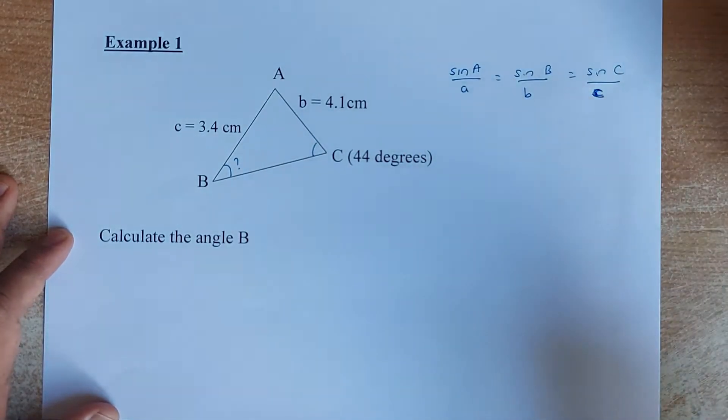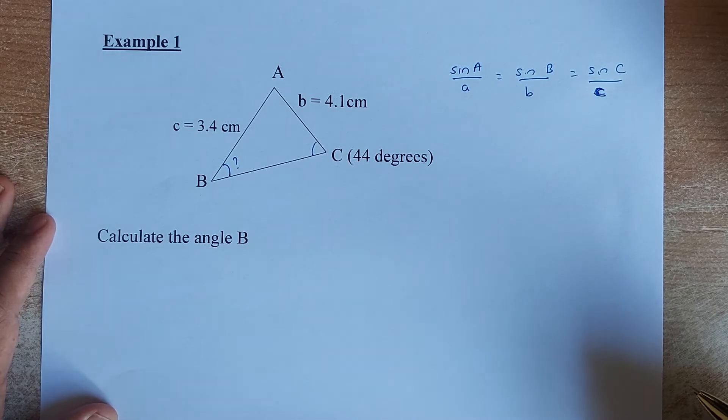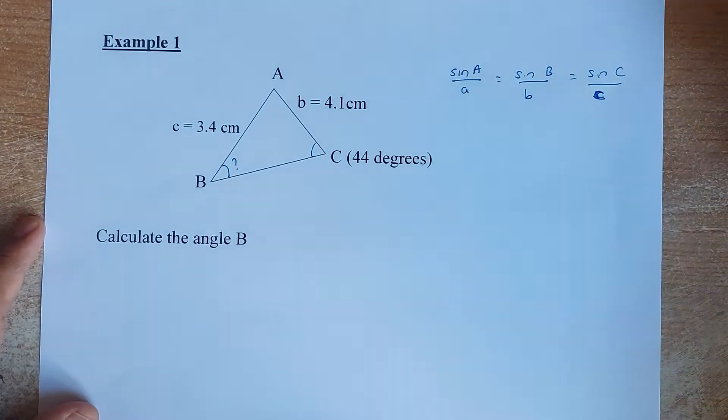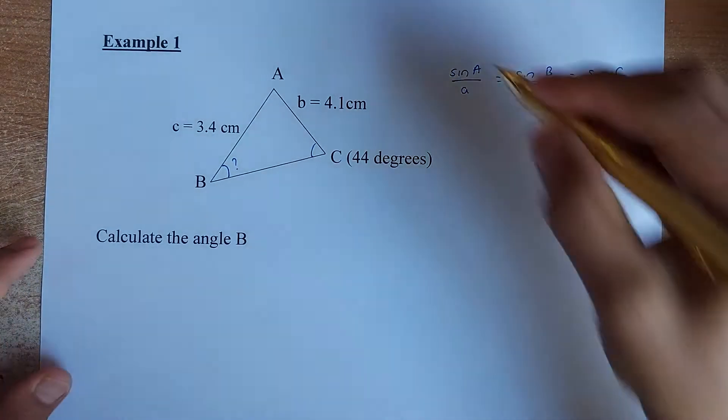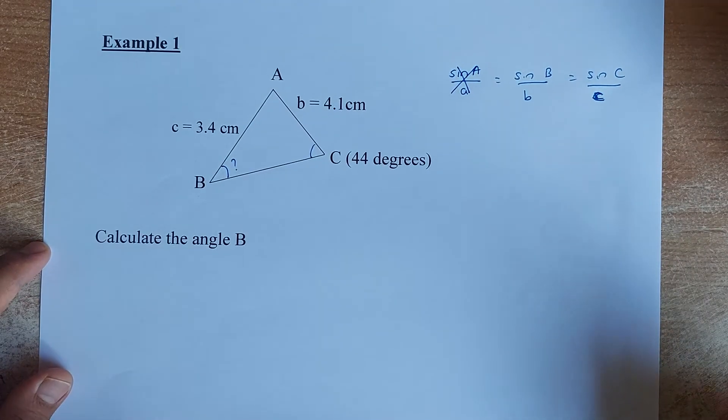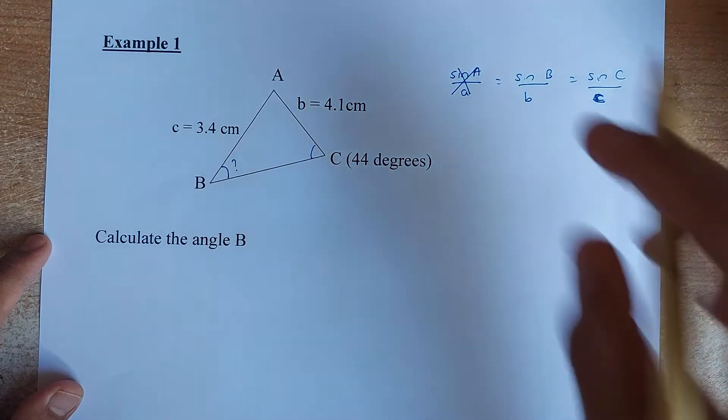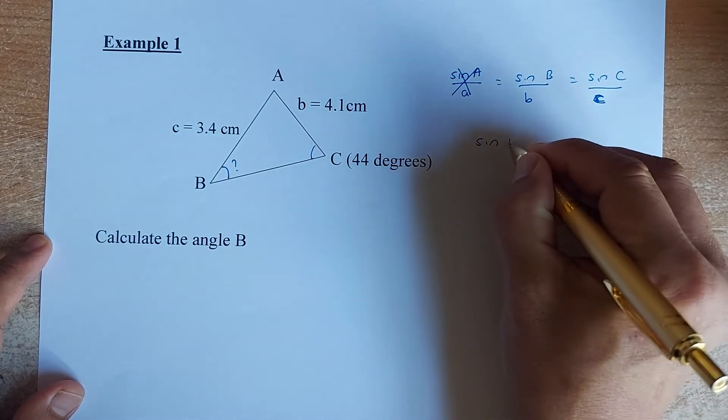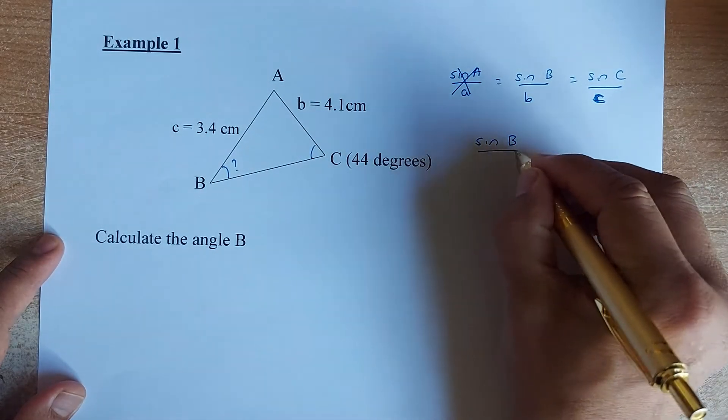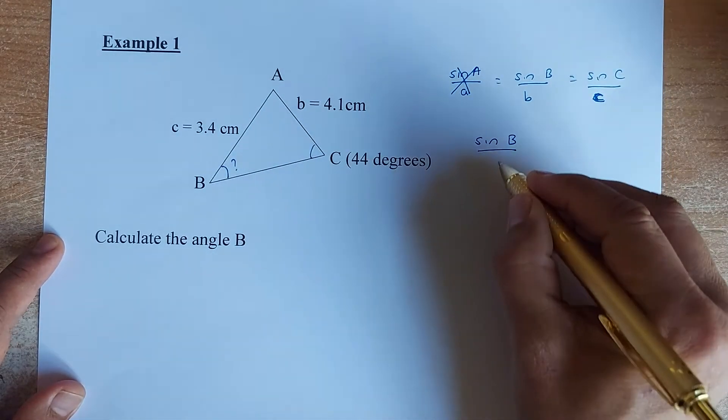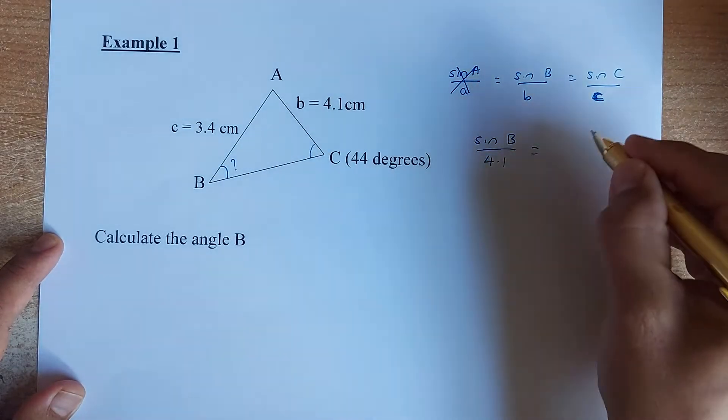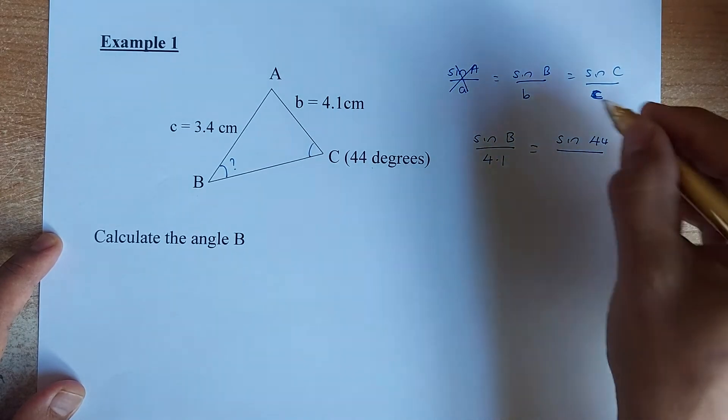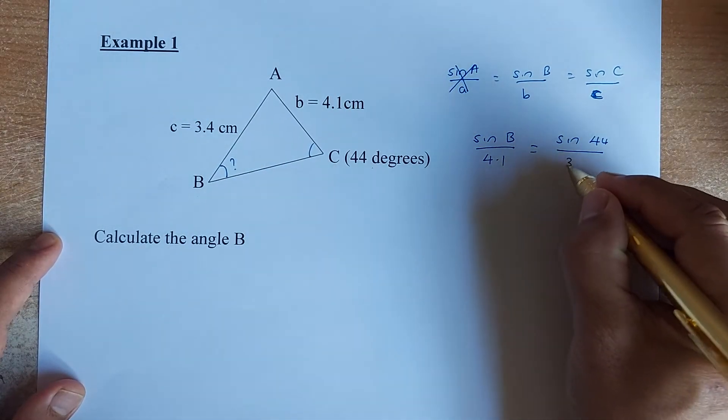The formula is sine A over a equals sine B over b equals sine C over c. We only need two pairs. One of the pairs can be eliminated. So we have a C pair and a B pair so we can get rid of the A, cancel the A formula. And now what we need to do, we are going to put that number and substitute them in the formula. So sine B, we are going to replace sine B because we are going to find B. And then the lowercase b is 4.1. Sine C is sine 44 because angle C is 44. And the lowercase c is 3.4.